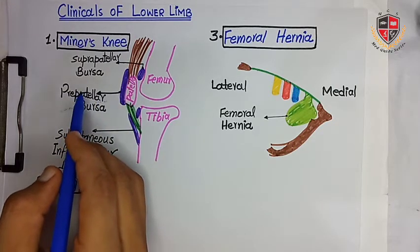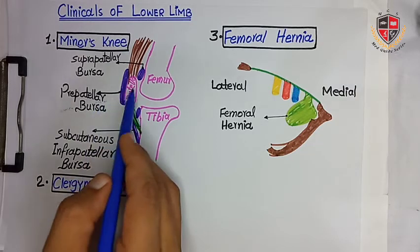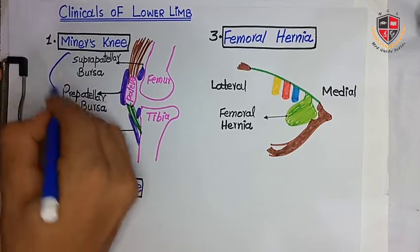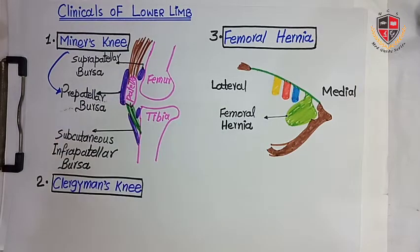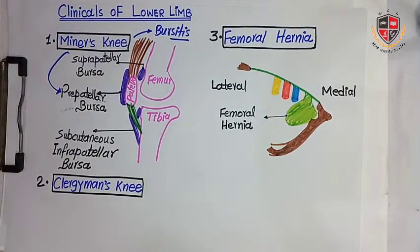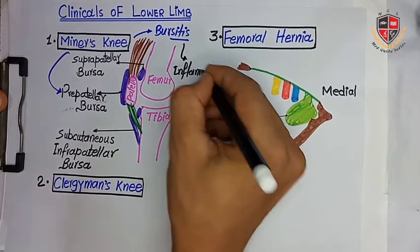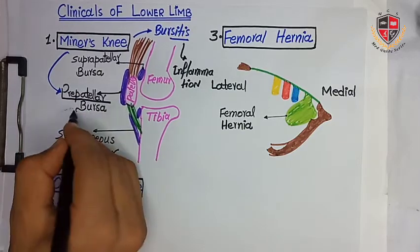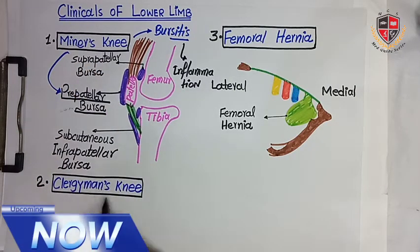In Miner's Knee, there is bursitis — the inflammation of a bursa. Specifically, bursitis of the prepatellar bursa occurs. The prepatellar bursa is in front of the patella. Bursitis means inflammation of the bursa, and the bursa reduces friction between the muscle and the bone. The next clinical is Clergyman's Knee.